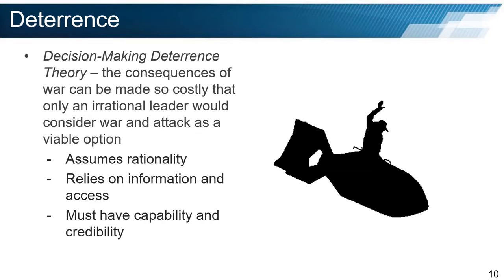Since the start of the Cold War, many misconstrue nuclear deterrence as the foundation for deterrence theory, believing that deterrence relies on the concept of mutual destruction to be successful. This is incorrect, and the concept of deterrence goes back hundreds of years. Classic deterrence theory simply relies on making an action by one party more costly than its possible benefits would warrant. Decision-making deterrence theory states that the consequences of war can be made so costly that only an irrational leader would consider war as a viable option. This relies on several underlying assumptions: first, it assumes rationality on the part of both actors; second, it relies on the conditions of information, access, capability, and credibility. An actor must identify and communicate the behavior they are trying to deter, demonstrate that they have the capability to respond in a painful or harmful way, and demonstrate that they are willing to respond to the behavior if it is engaged in or continued.